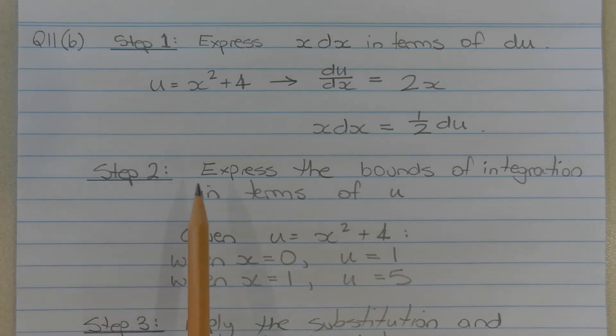The second step is to express the bounds of integration in terms of u. Given u is equal to x squared plus 4, when x equals 0, u is equal to 4. When x equals 1, u is equal to 5.